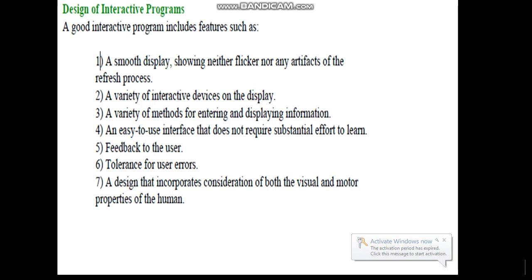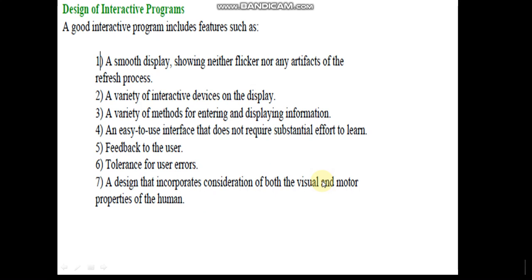We will now see what are the needs for designing an interactive program, which is the last part of input and interaction. A good interactive program has to include the following features: a smooth display showing neither flicker nor any artifacts of the refresh process; a variety of interactive devices should be attached; a variety of methods for entering and displaying information; an easy-to-use interface; a good GUI should be provided; it should not require substantially difficult effort to learn or use; it should be able to collect feedback from the user and tolerate minor mistakes done by users, such as pressing keys of the keyboard or mouse unintentionally; and a design that incorporates consideration for both visual and motor properties of the human, like clicking a mouse button, dragging, and dropping.